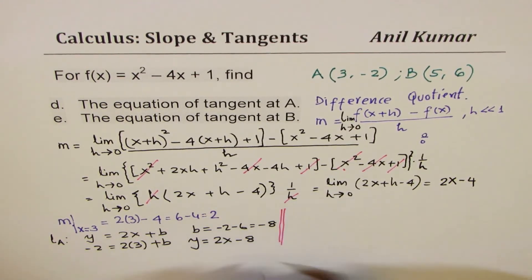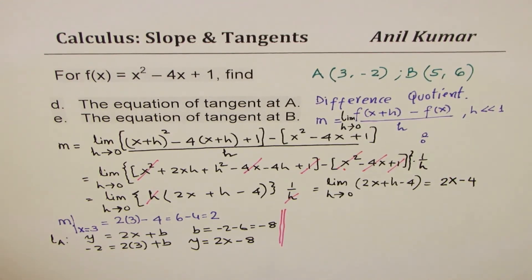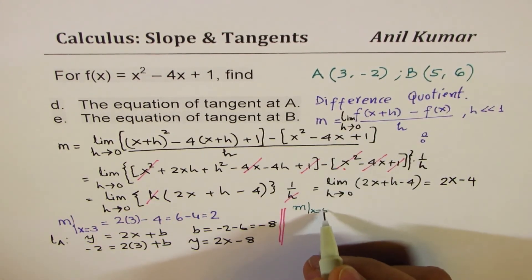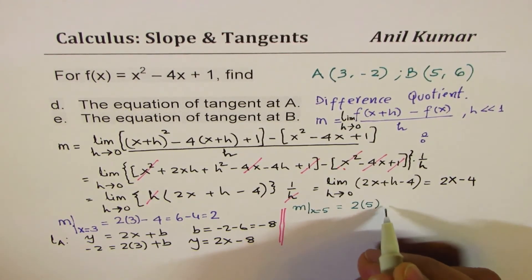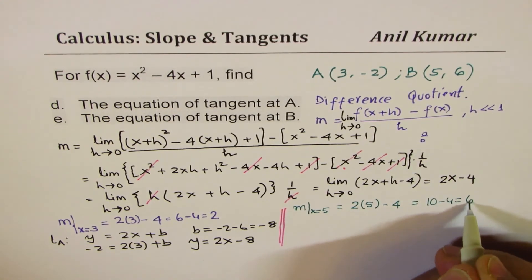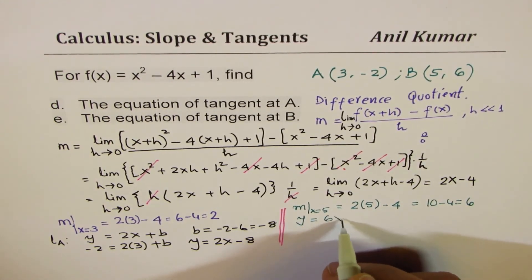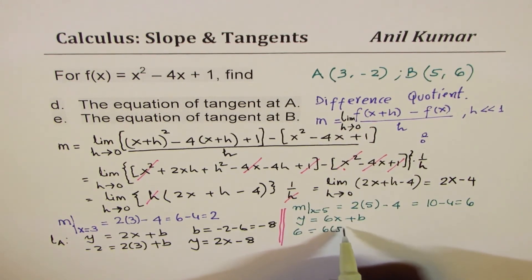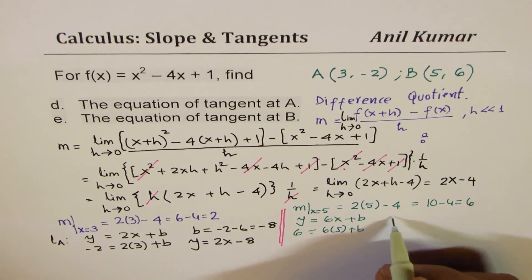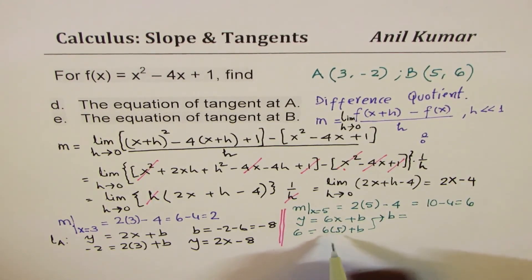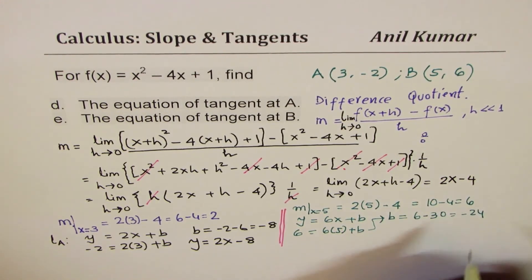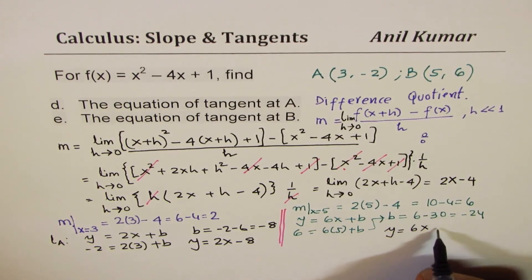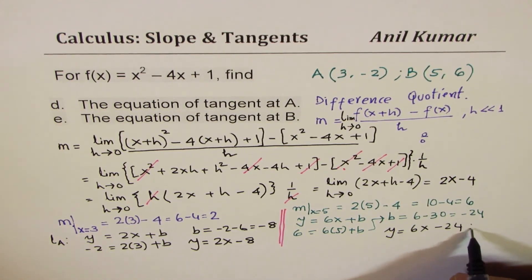For tangent at B, x = 5: slope m = 2(5) - 4 = 10 - 4 = 6. Writing y = 6x + b and substituting point B (5, 6): 6 = 6(5) + b, so b = 6 - 30 = -24. Therefore the equation of tangent line at B is y = 6x - 24.